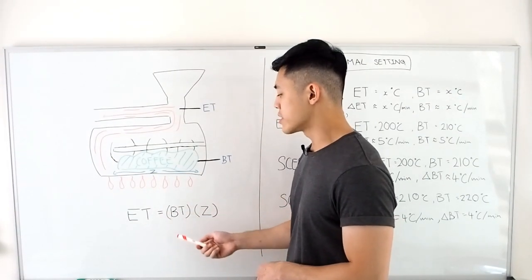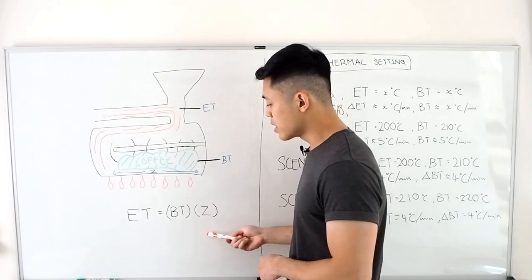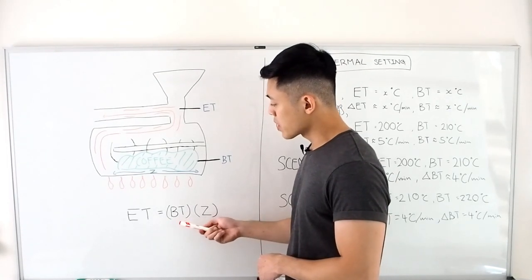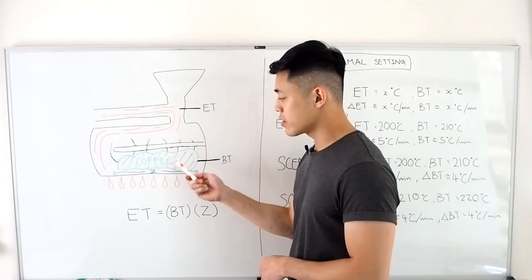Therefore, your environment temperature is a direct result of an interaction between the hot air in the drum measured by your BT—remember there's no green coffee in here at this moment—and the surface temperature of the metal of your drum.